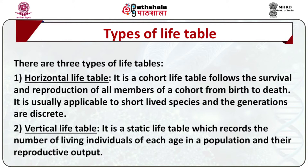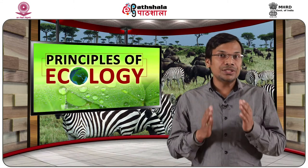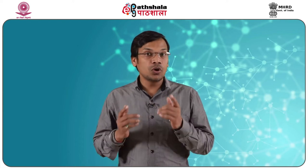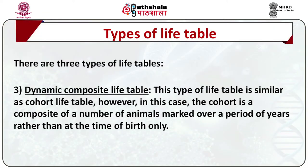Second, the vertical life table, also called the time-specific or static life table: it records the number of living individuals of each age in a population and their reproductive output. It is based on the assumption that each age class is sampled in proportion to its number in the population, and that death and birth rates are constant and the population is stable. Third, the dynamic composite life table: construction is similar to the cohort life table; however, the cohort is a composite of a number of animals marked over a period of years rather than at the time of birth only.